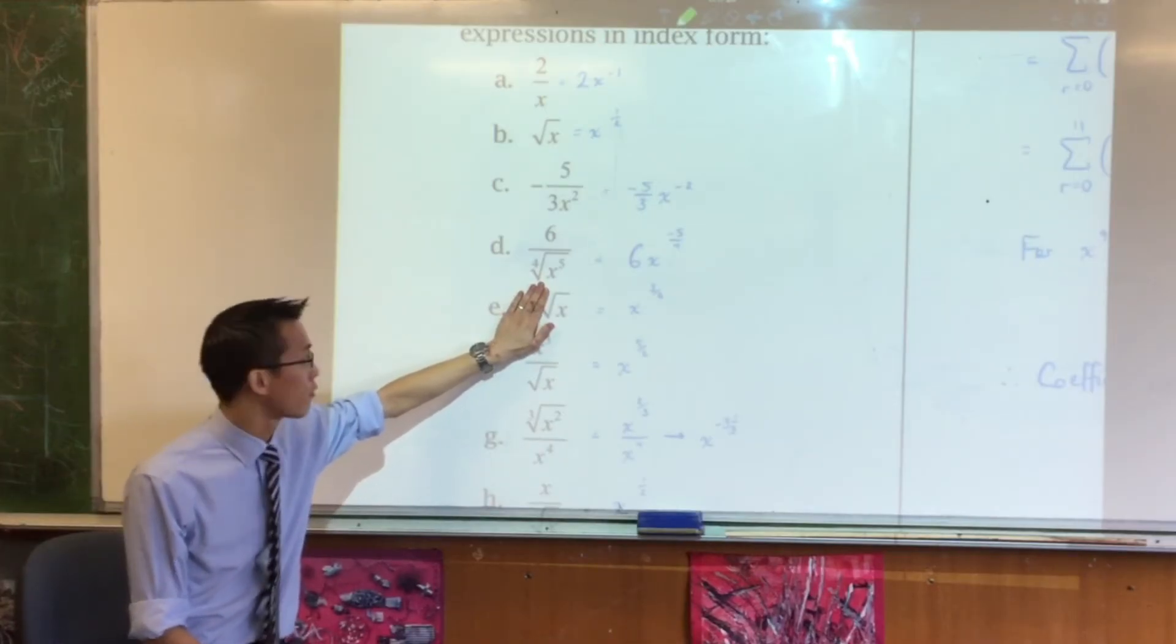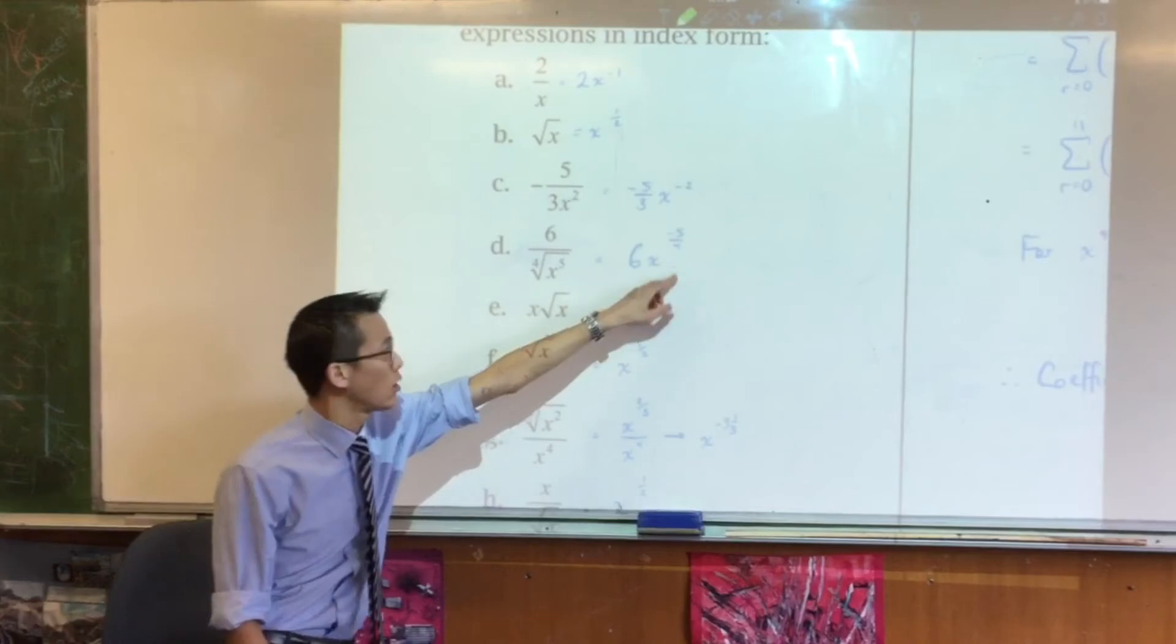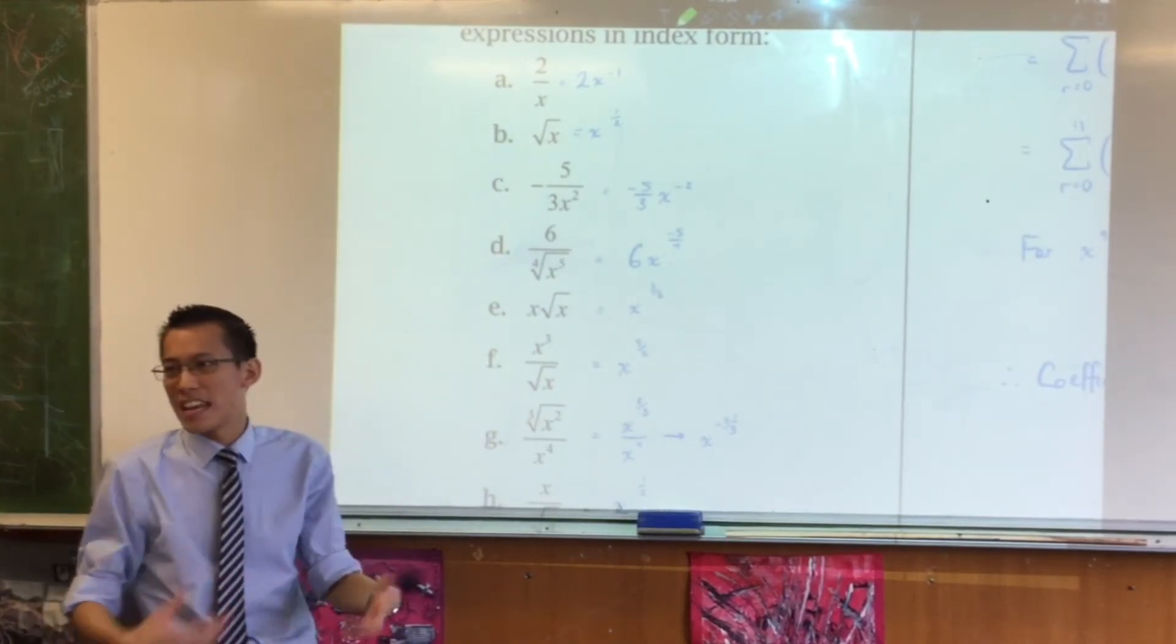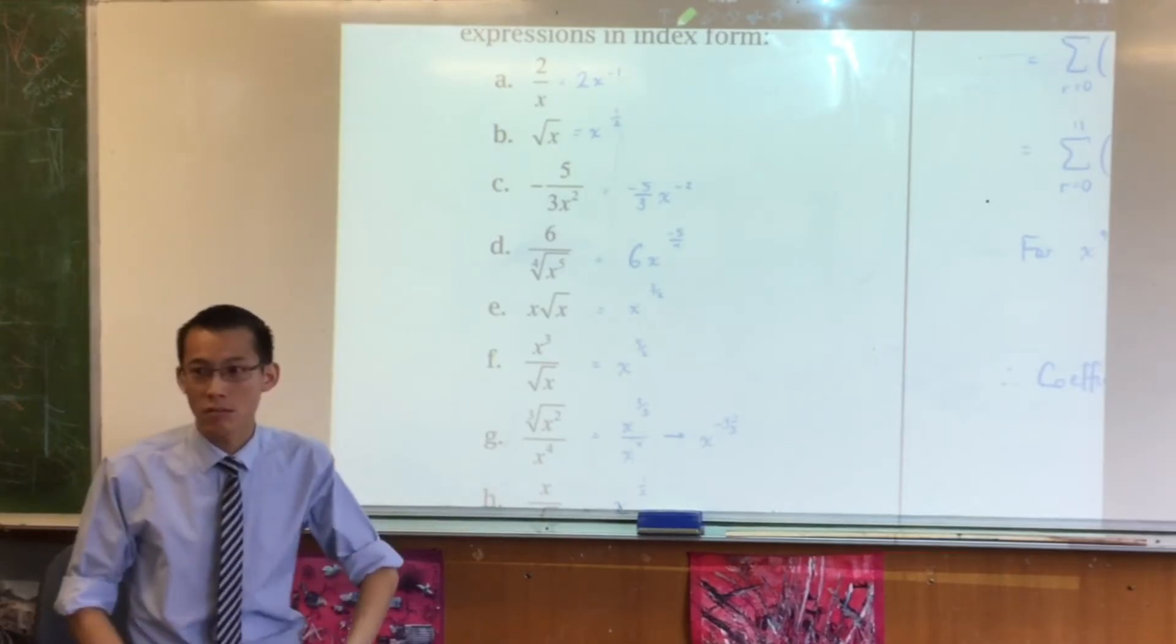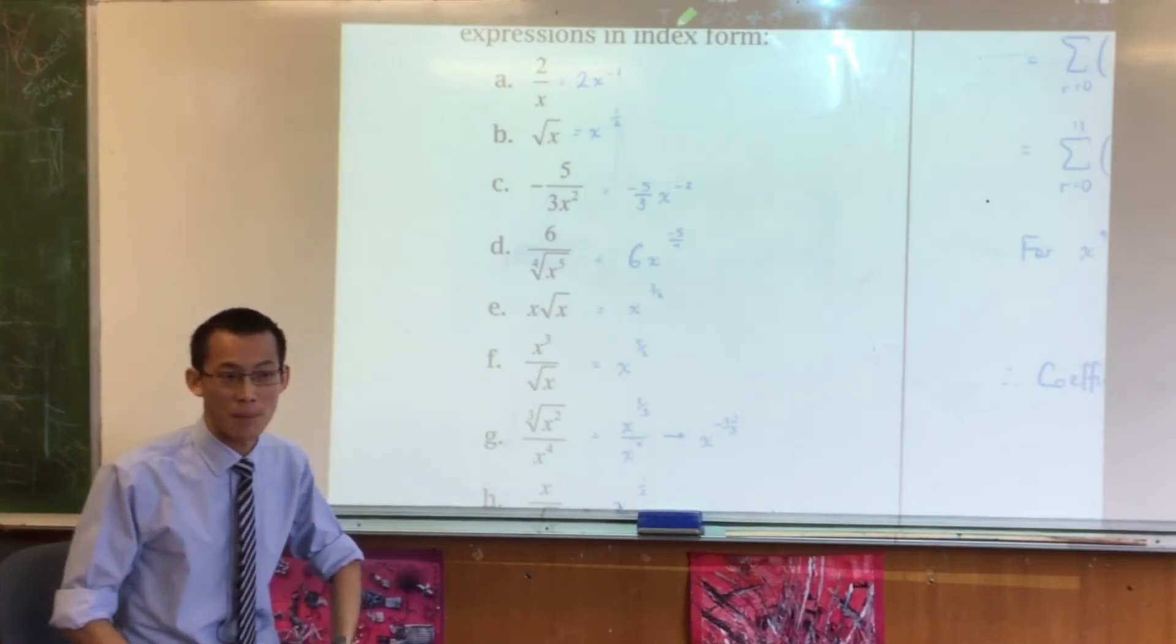a quarter, right? So that's where this quarter comes from. And then when you've got things on denominators, it's just that negative index. So what do you think? Did I make any errors, or are you happy with that? Are there any questions?